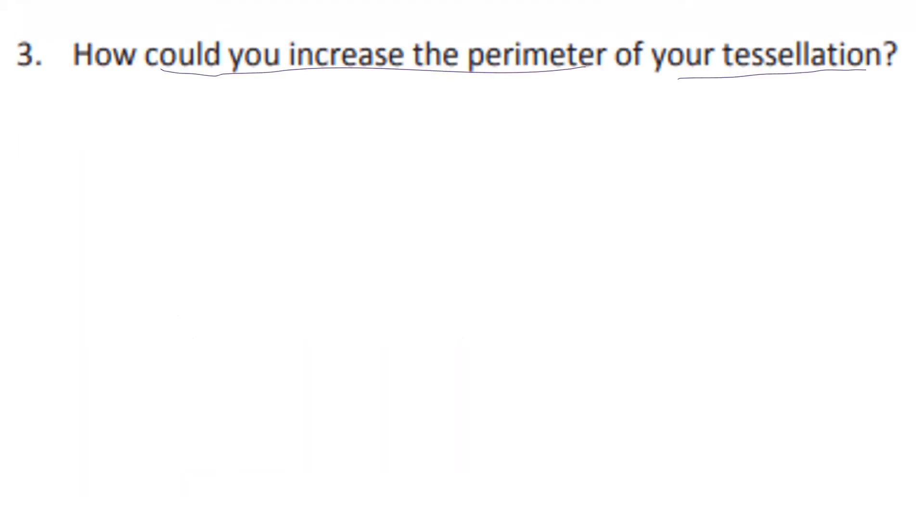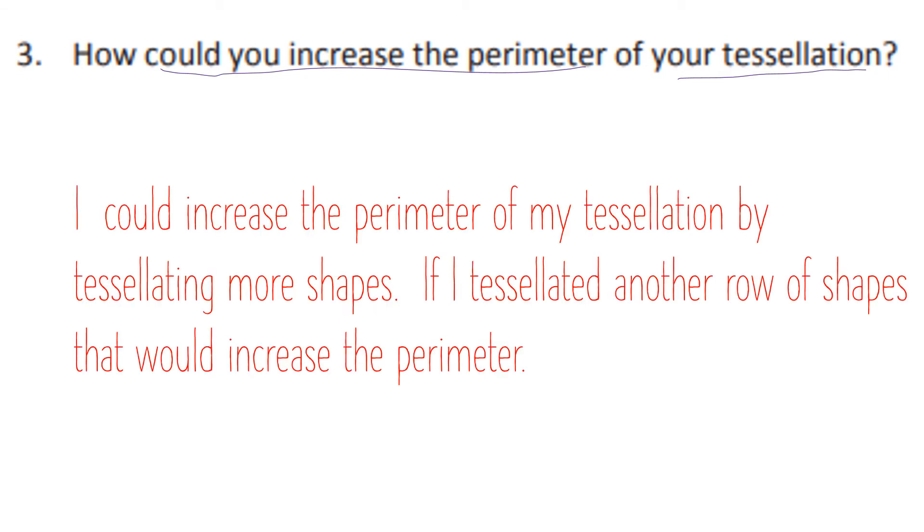So let's keep going. So now, how could you increase the perimeter? Well, one of the ways I could increase the perimeter. You tell me at least one way. Remember, perimeter is your border. The outside. All right. We're going to go over the answer now. So I said I could increase the perimeter of my tessellation by tessellating more shapes. If I tessellate another row of shapes, that would increase the number. So right, if you add more to your picture, make it bigger, the perimeter gets bigger. Let's keep going.